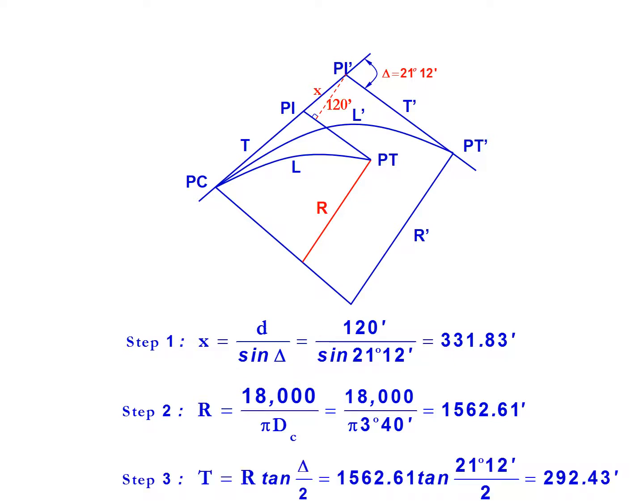The third step is to find the tangent, which is the radius multiplied by the tangent of delta divided by 2. We take the radius from the previous step, 1562.61 feet, multiplied by the tangent of 21 degrees 12 minutes divided by 2, which gives us a tangent length of 292.43 feet. That's the existing tangent T.